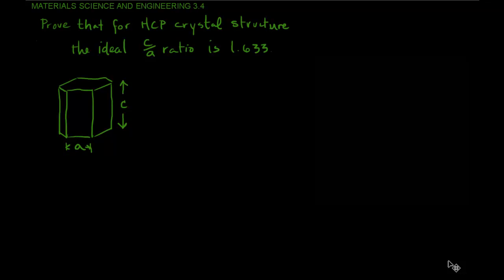Let's prove that for the hexagonal close-packed crystal structure the ideal C to A ratio is 1.633. This is useful because we can use it to calculate the ideal or theoretical density of a structure made up of all one type of atom.